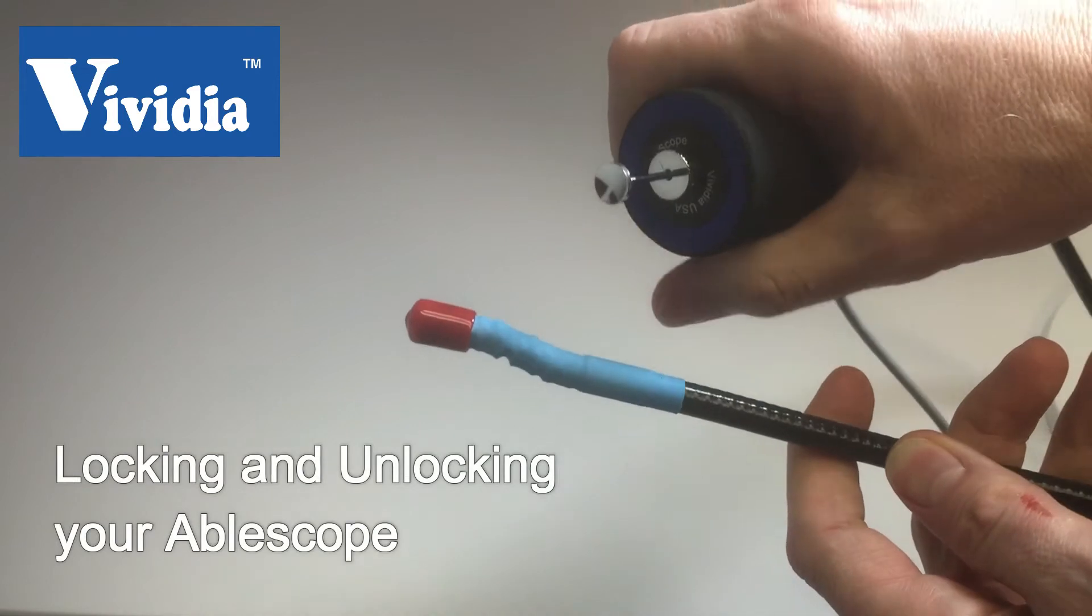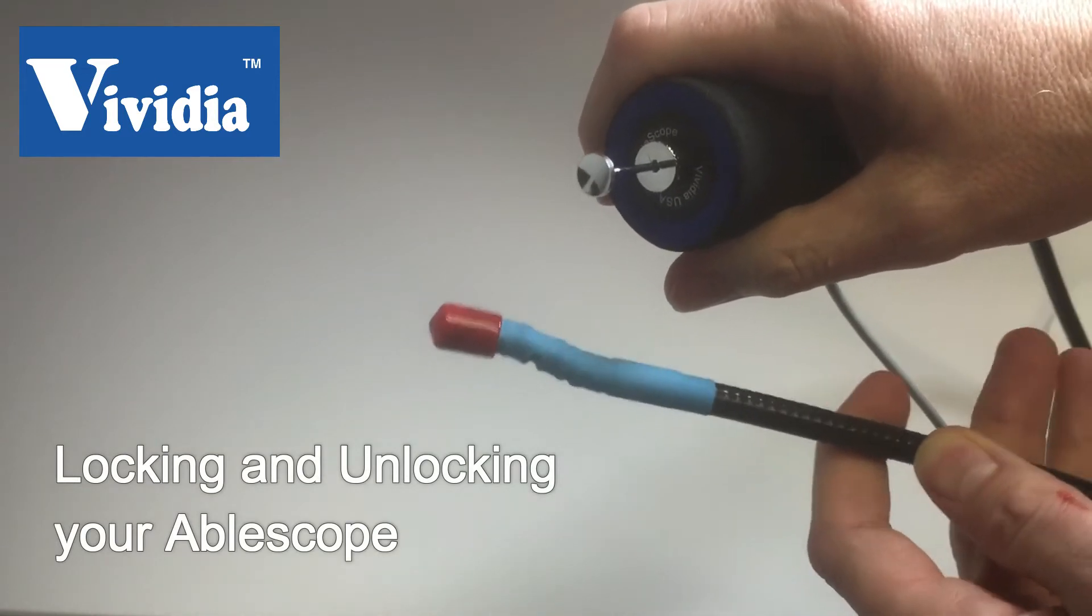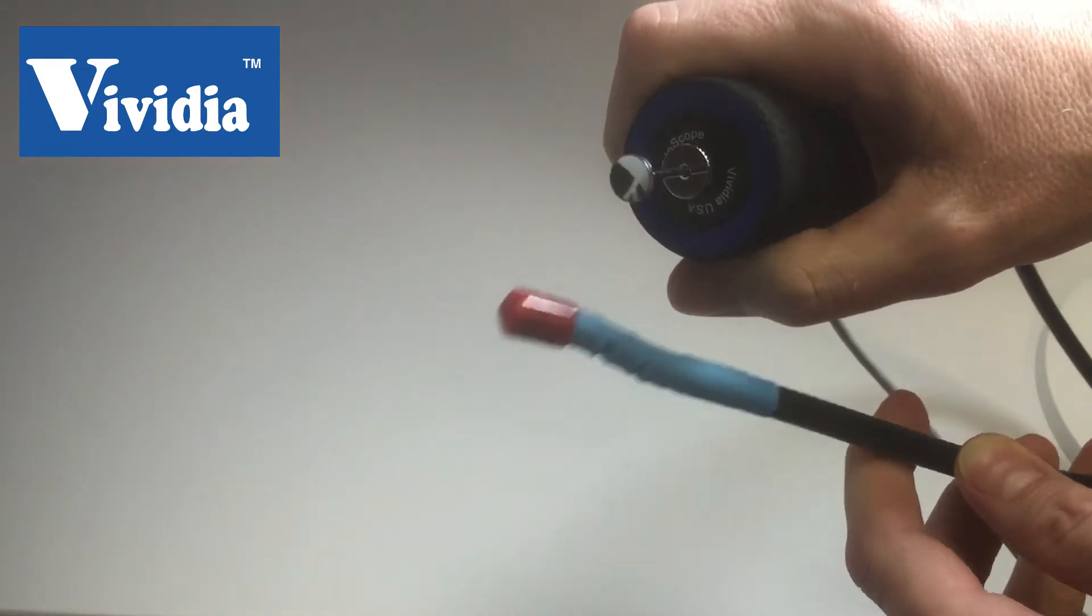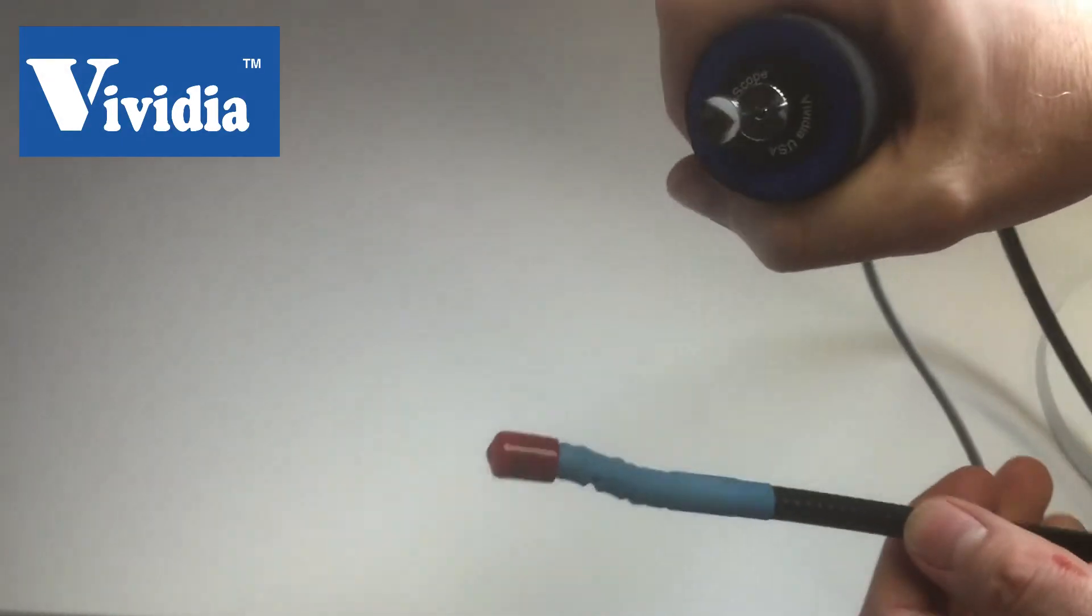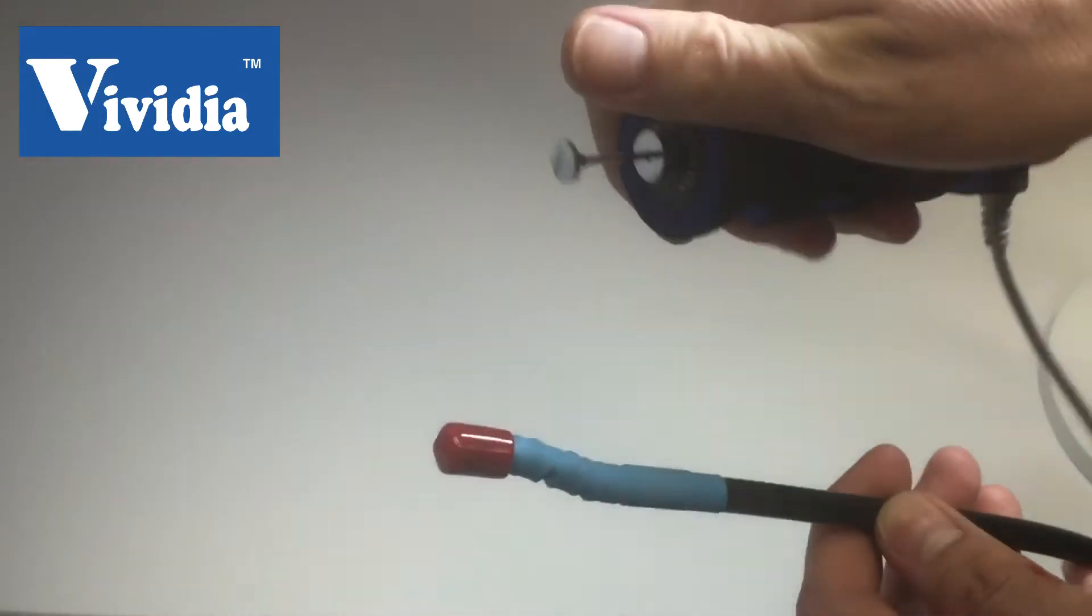In this video we are going to discuss the locking feature of the Vividia Ablescope. All the Vividia Ablescope models have a locking feature so that you can get a stationary view from your camera at any angle.